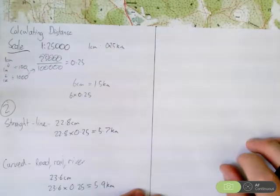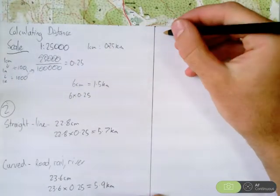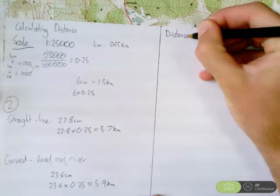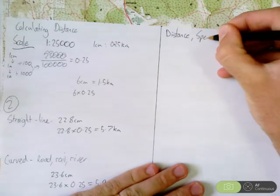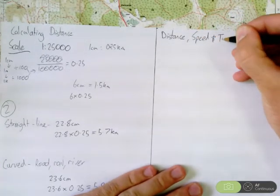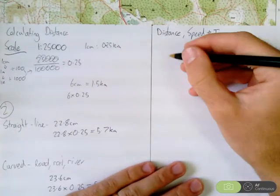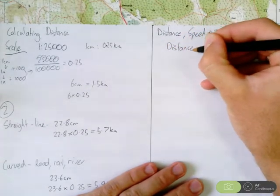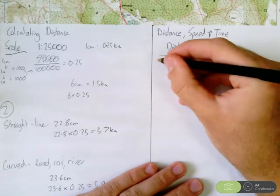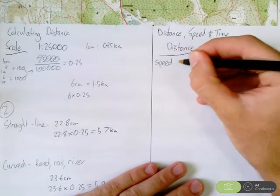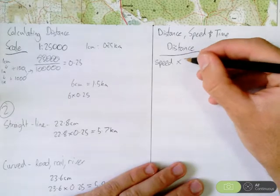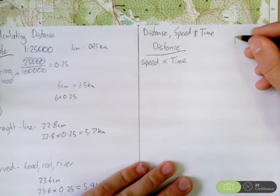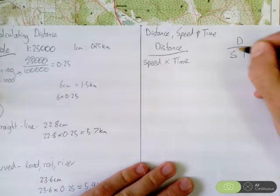Now, hand in hand, this goes with the distance, speed and time relationship. It's a relationship because distance equals speed times time. Now, you need to remember this triangle. D, S, T.